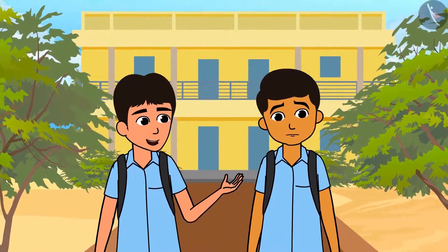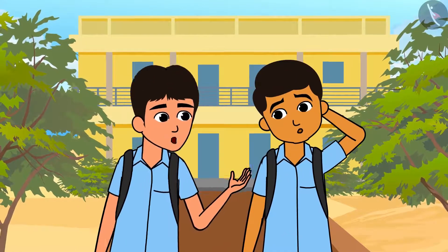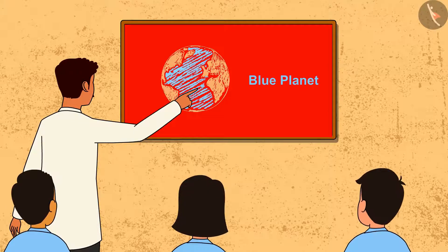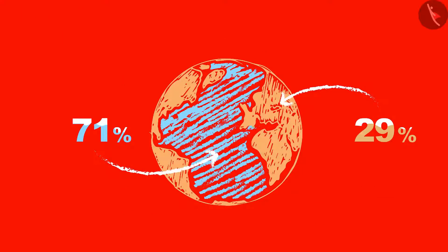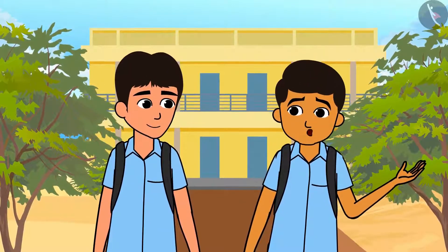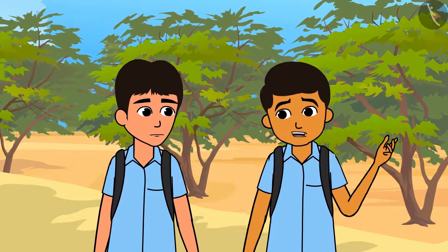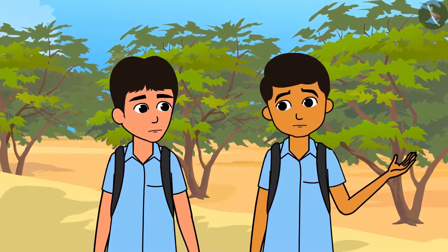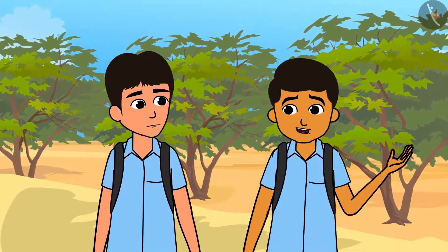What happened, Bhuvan? You are looking confused. Yes, Arjun, I'm thinking about something. If you remember, today in geography class, Master Ji told us that the Earth is also called a blue planet because 71% of the Earth's surface is covered with water, and that is why it appears blue when seen from space. The rest 29% of it is land. If 71% of the Earth's surface is covered with water, then how can there be a shortage of water? Let us go to Dadaji and ask him.